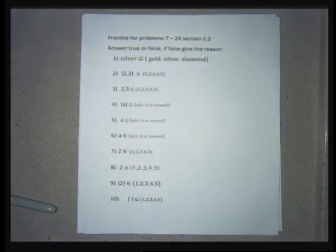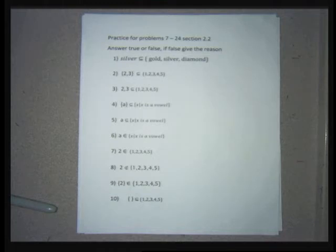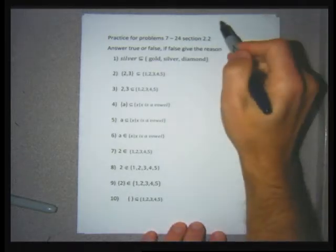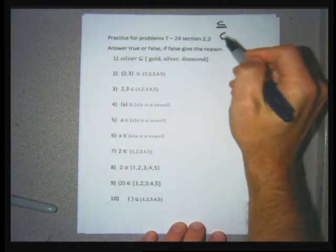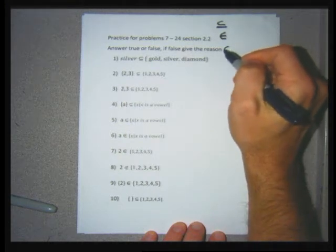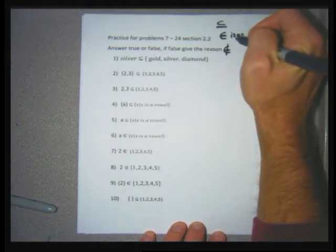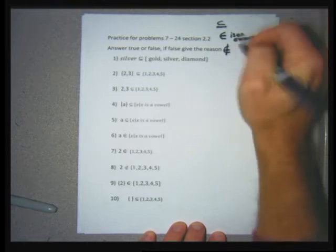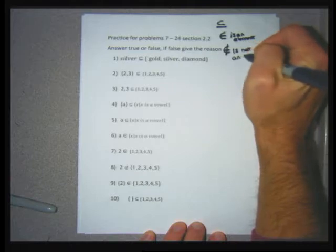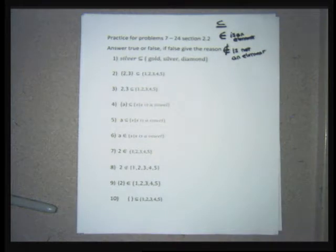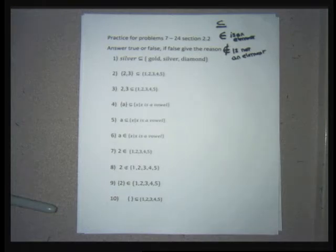This group of problems prepares us for questions in the book. Some are subset problems and some use symbols from the last section — the subset symbol, the 'is an element' symbol, and the 'is not an element' symbol. By the time we've worked through these, you should be ready to do the problems in the text.